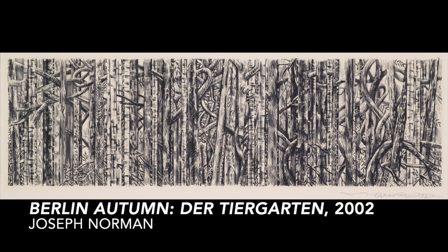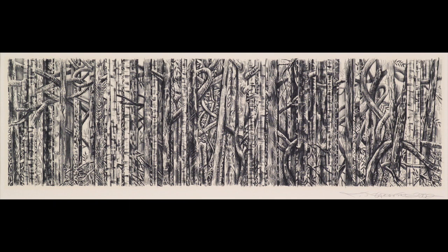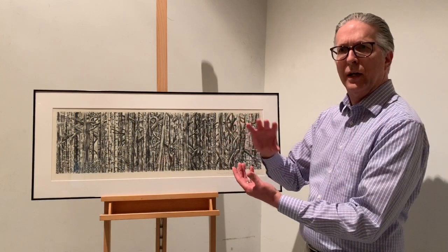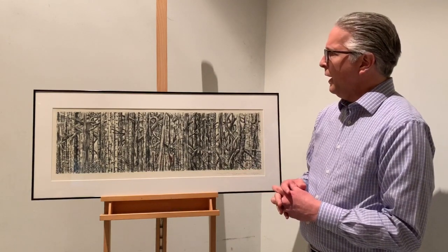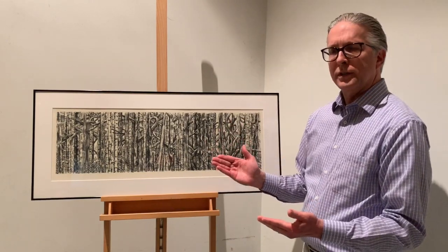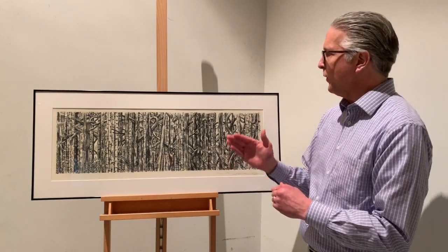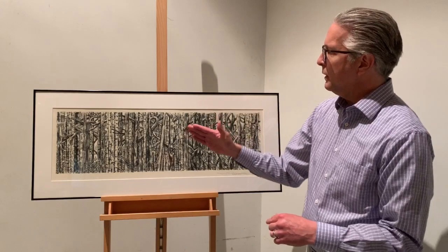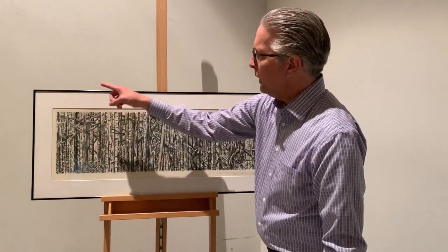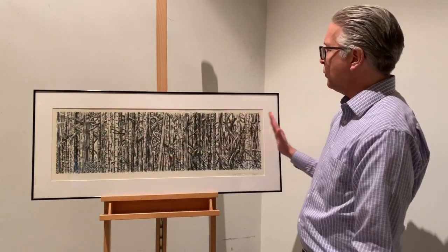The first artwork is a lithograph — a kind of print — made by the artist Joseph Norman. What we're looking at is basically a forest of birch trees, which are the white trees that have darker areas where the bark isn't as visible. And because it's a forest full of trees, it has lots of vertical lines, so when you look from left to right you see vertical after vertical line carrying your eyes across.